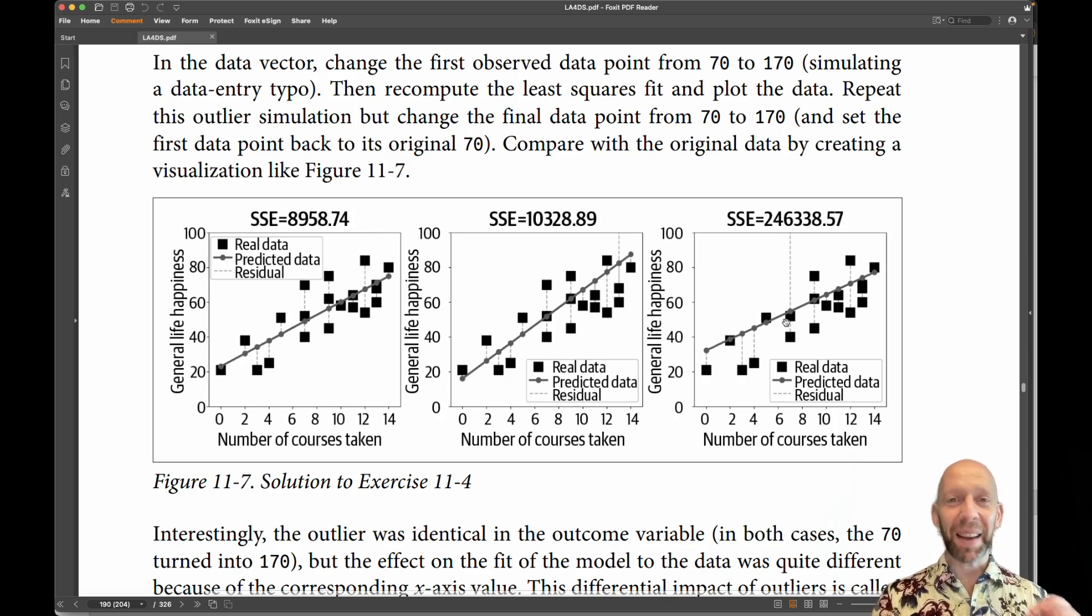Now here, it's the exact same numerical value gets replaced with exactly the same outlier. So one outlier, 70 turns into 170, 70 turns into 170. But here, the sum of squared errors is almost 250,000. So more than twice the amount of error, or at least sum of squared error is more than twice that as it is here. And so this is actually relatively not so bad here.